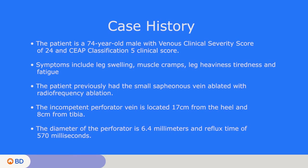The patient is a 74-year-old male with a venous clinical severity score of 24 and a CEAP classification 5 clinical score. Symptoms include leg swelling, muscle cramps, leg heaviness, tiredness, and fatigue.